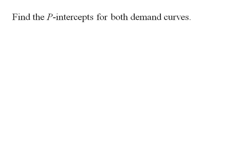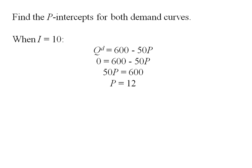Let's find the P-intercepts for both demand curves. When income was 10, my demand equation is Q^d = 600 - 50P. Setting Q^d to zero and solving for P, I get an intercept of $12. When income was $5,000, my demand equation was 550 - 50P. Setting it equal to zero, I get a price of $11.